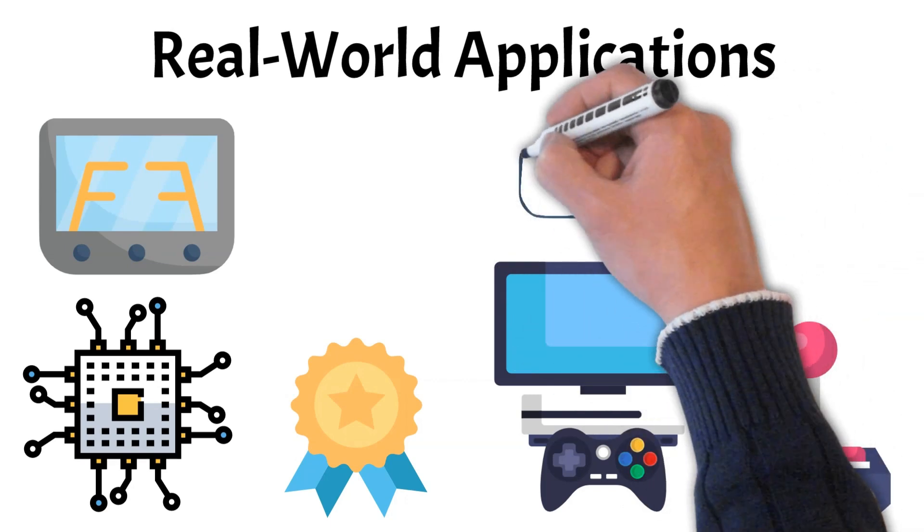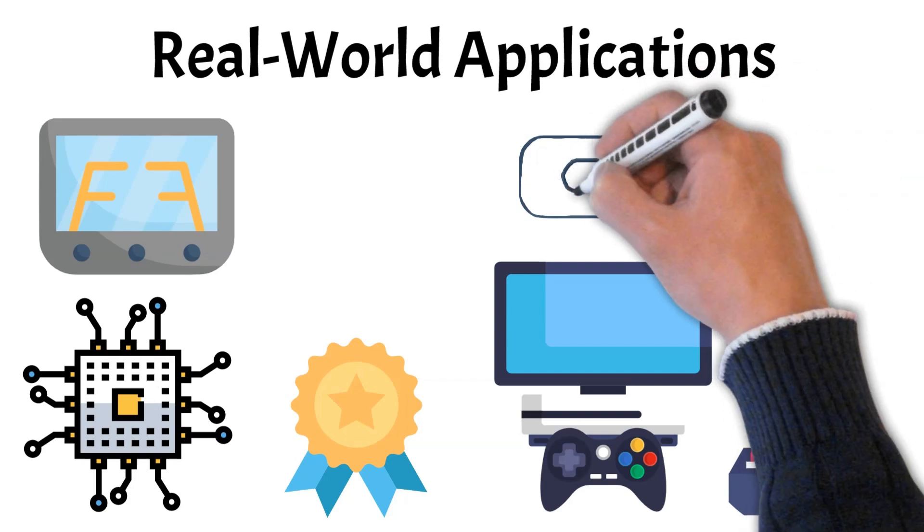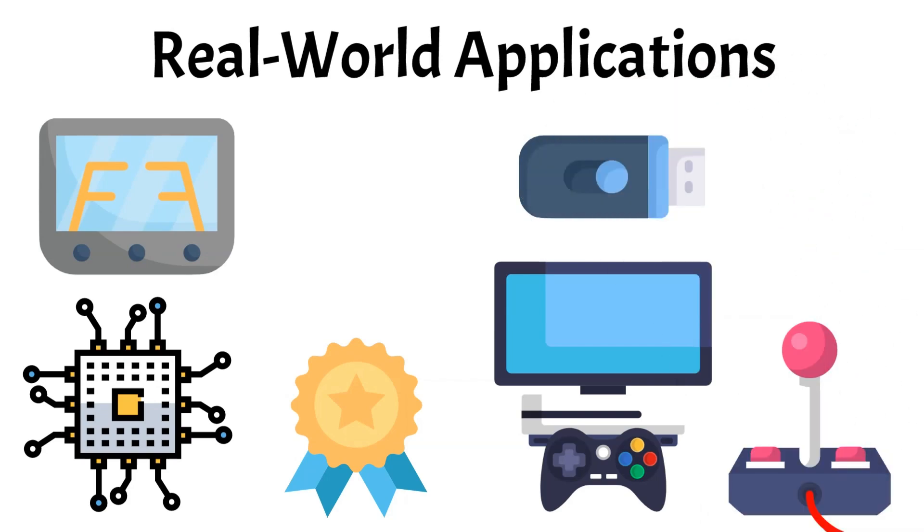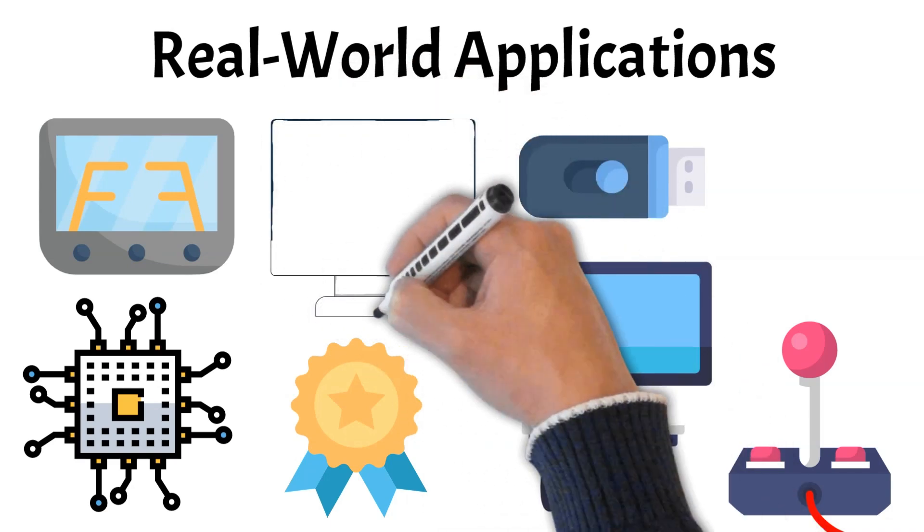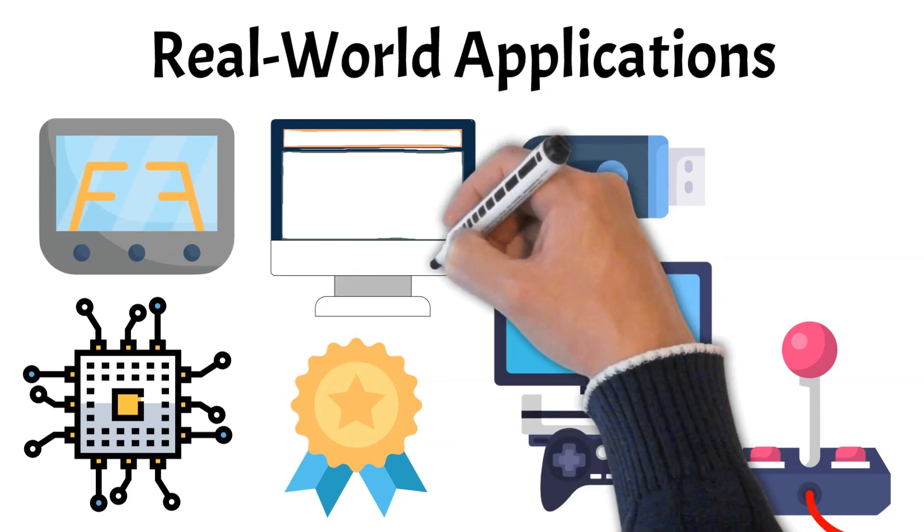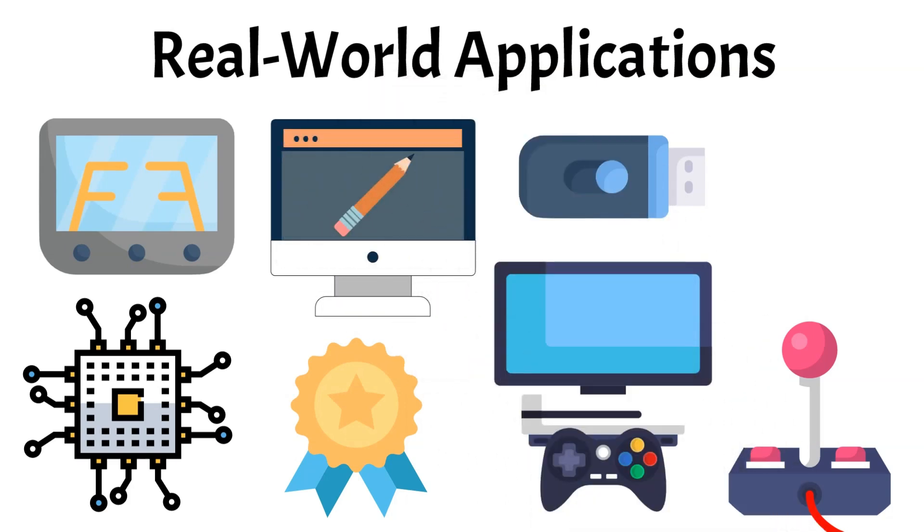Game consoles and graphics programming also utilize assembly for optimizing performance and making the most out of hardware capabilities. Additionally, assembly is critical in device drivers which act as the interface between hardware and the operating system. Even parts of operating systems themselves, especially those that need to interact directly with hardware, are often written in assembly. By using assembly language, developers can fine-tune programs to run as efficiently as possible, which is particularly important in resource-constrained environments or performance-critical tasks.